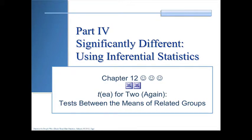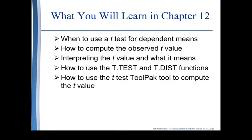Chapter 12: More T for 2 — t-test for testing between the means of related groups, also called a paired t-test. There's not a lot different between independent samples and dependent samples t-test. This chapter goes over when to use the dependent samples test, and I will point out the differences when they come up.